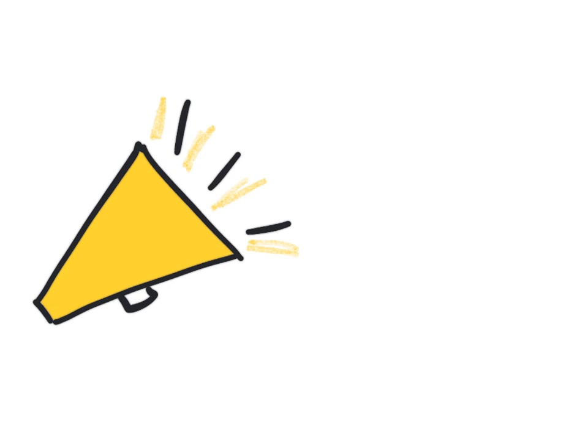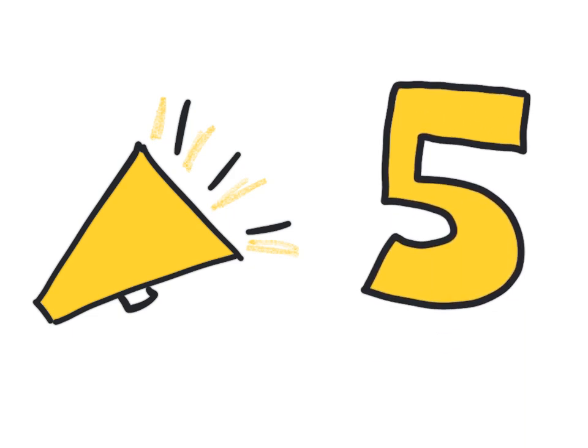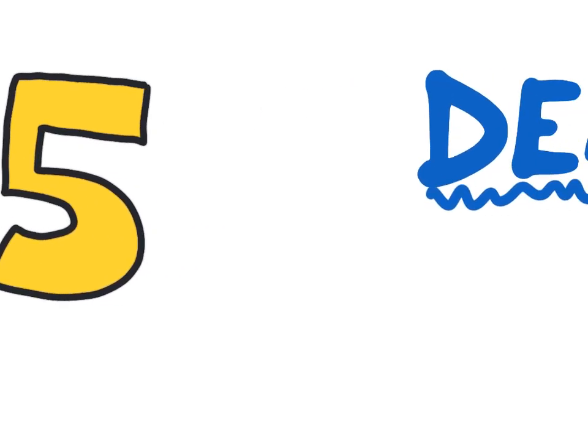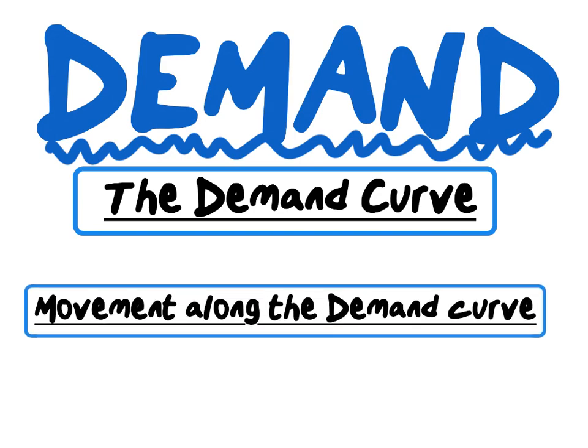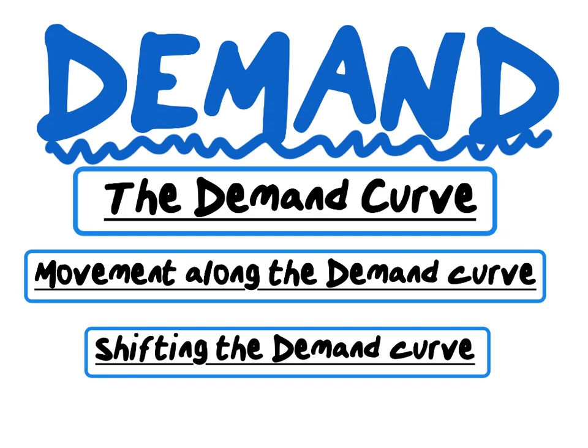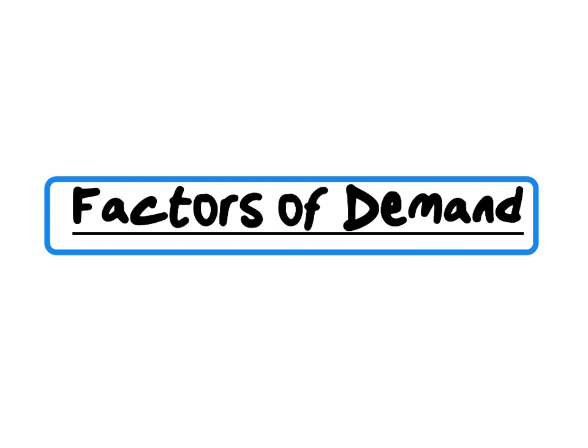Hi econ students and welcome back to the explainer series on demand and supply. This is part five in our series — be sure to watch the previous explainer videos if you have not already done so. Today's focus will be on the factors of demand. We will analyze both an increase and a decrease in demand and how this affects equilibrium price and quantity.